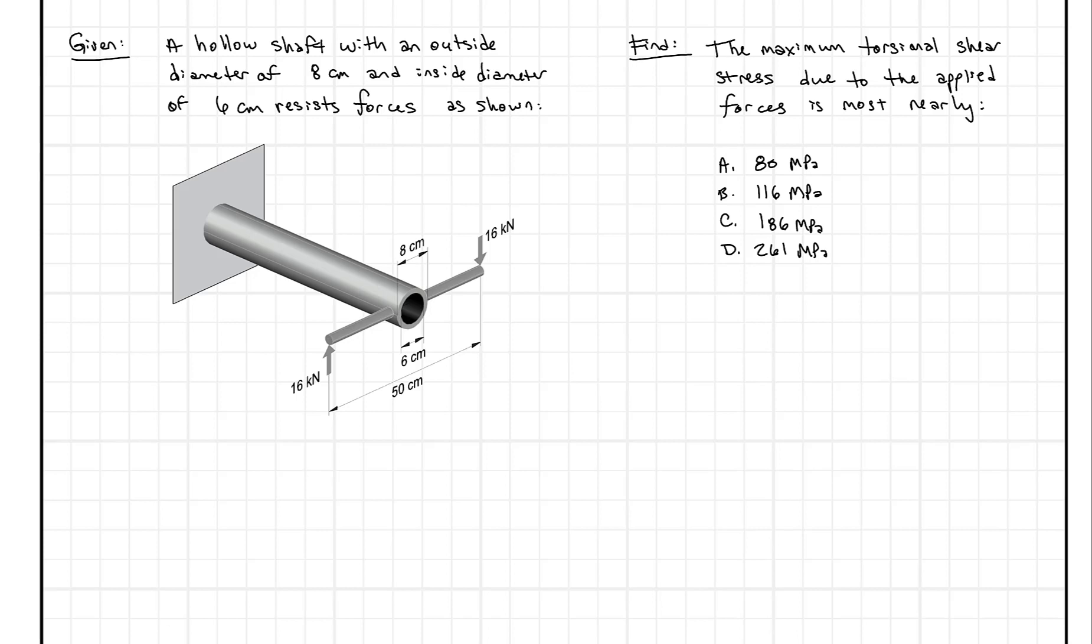So in this problem, we're given a hollow shaft with a couple of forces applied to it. And we have some dimensions here, but what we're trying to find is the torsional shear stress due to the applied forces. We have a force here that's 16 kilonewtons, a force here that's 16 kilonewtons. Those are separated by 50 centimeters, and that's important. That's going to help us figure out this torsional shear stress.